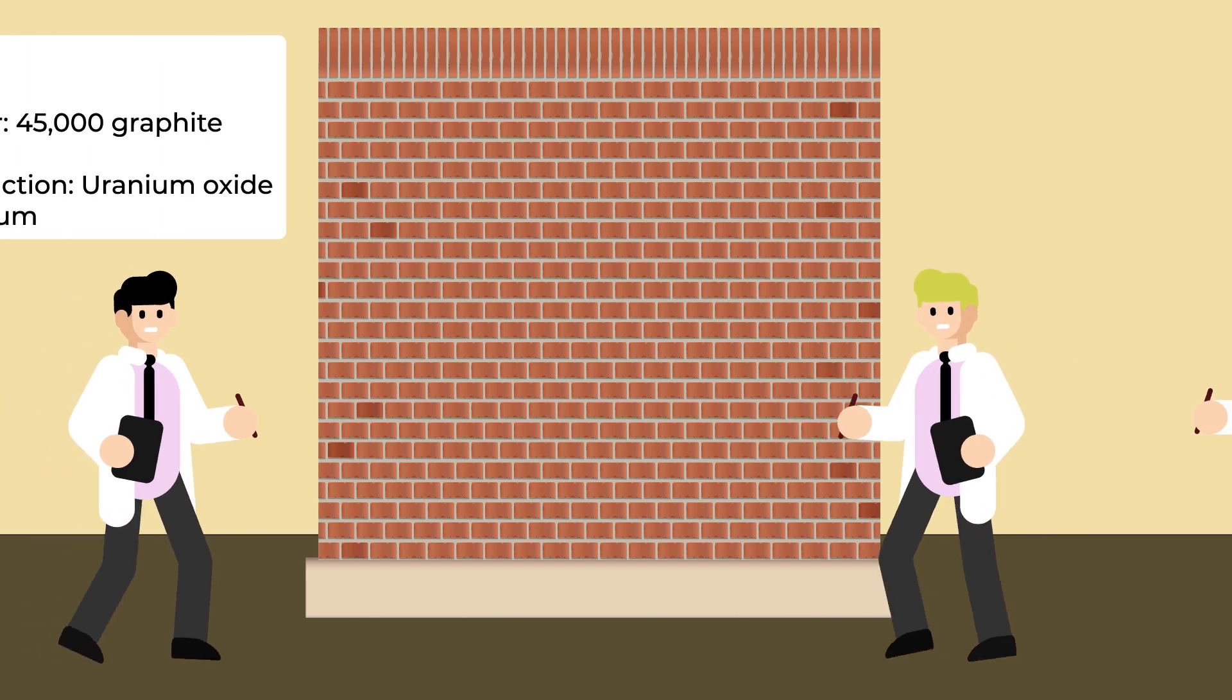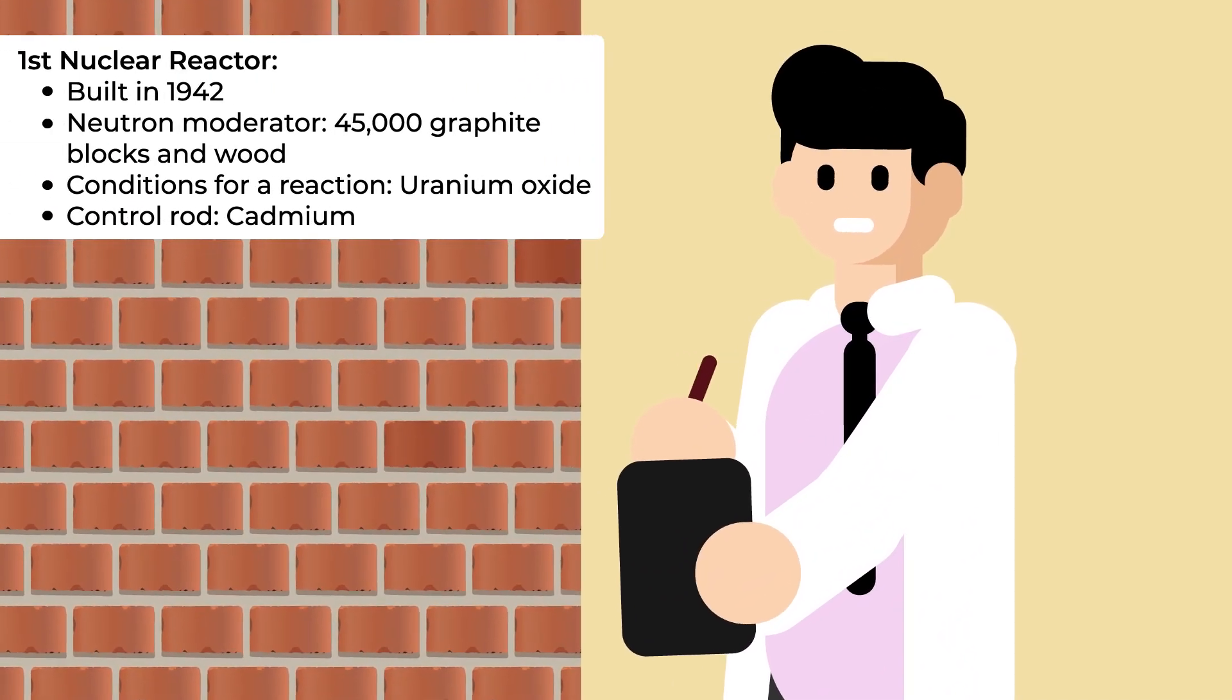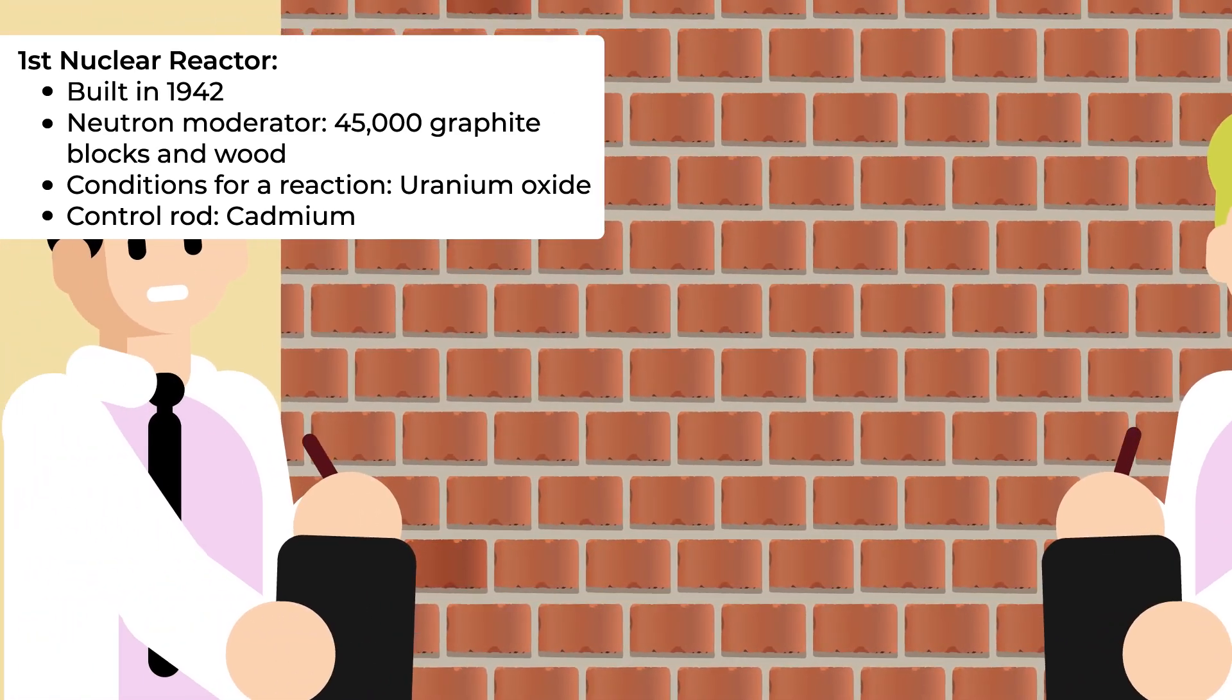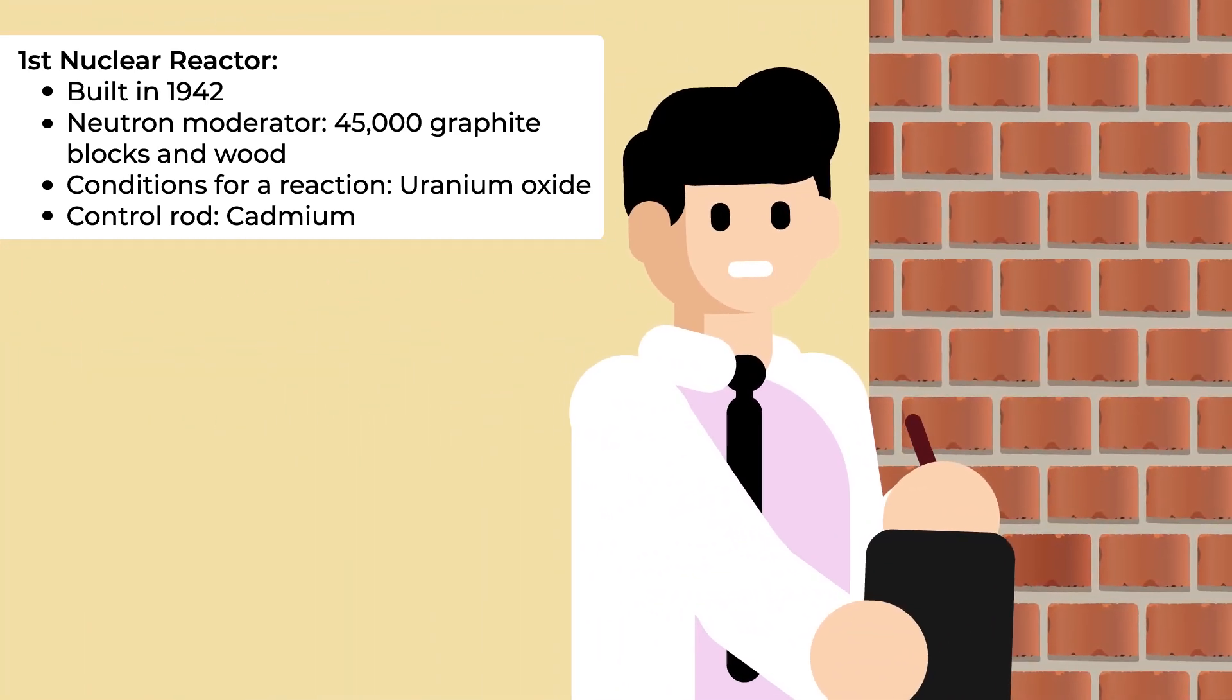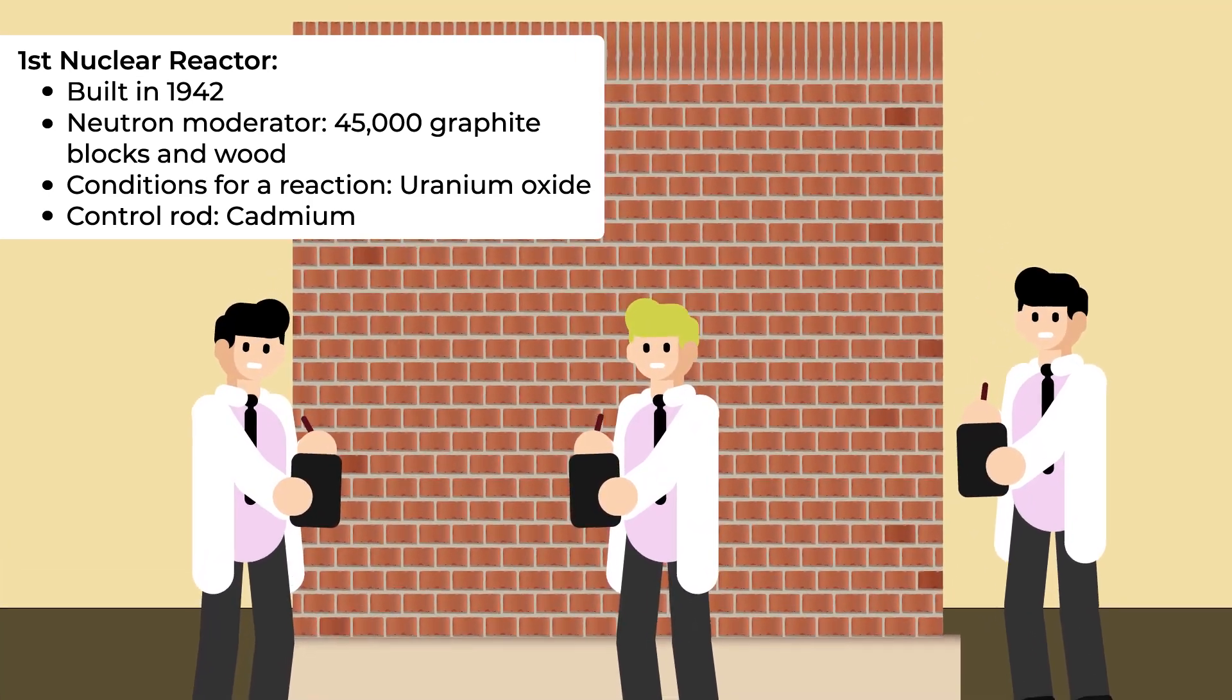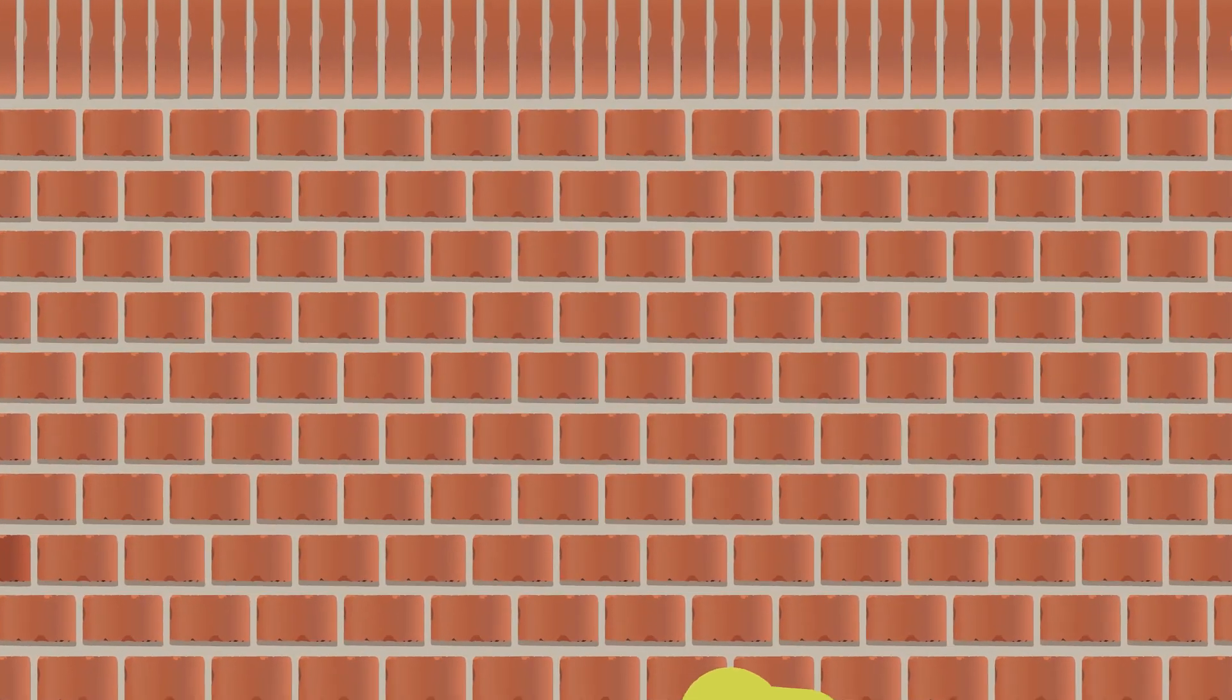In 1942, Fermi and his team assembled a reactor built of 45,000 graphite blocks and wood, materials that acted as the reactor's neutron moderator. A powder made of uranium oxide was poured into the blocks to set the right conditions for a reaction. And finally, a control rod made of cadmium was used to control the reaction by absorbing neutrons and acting as a kind of brake.